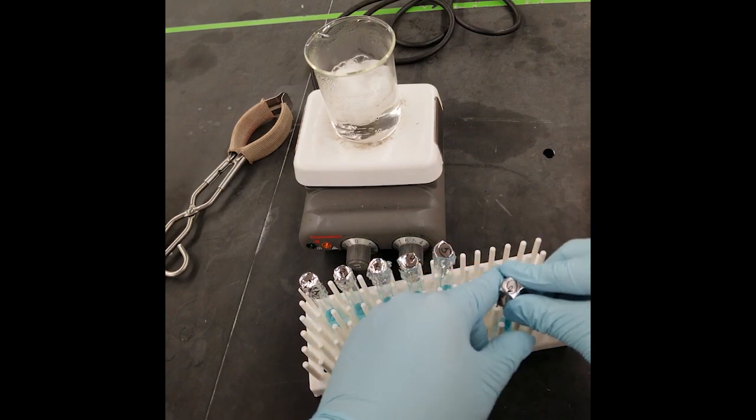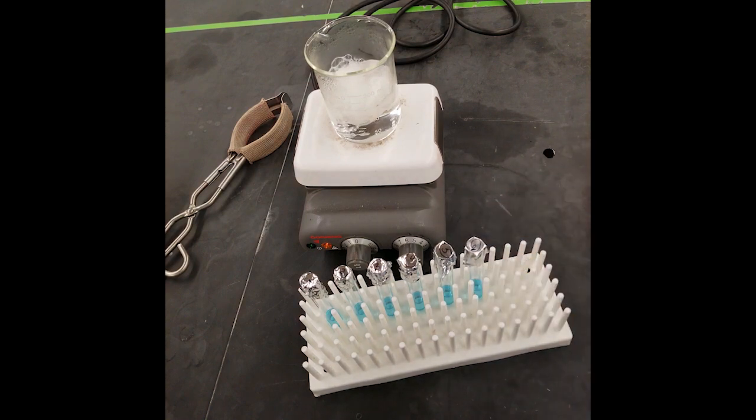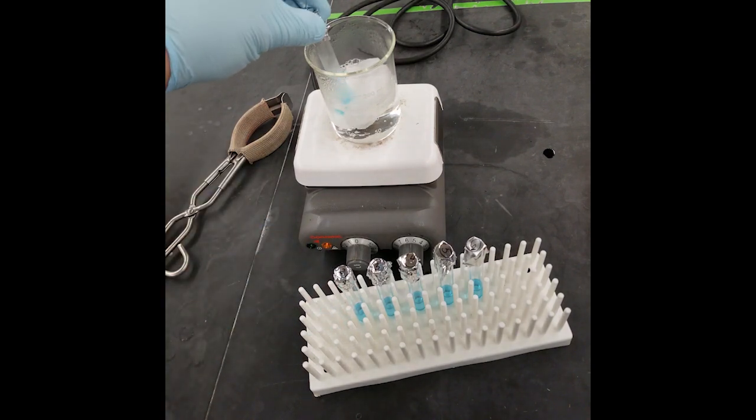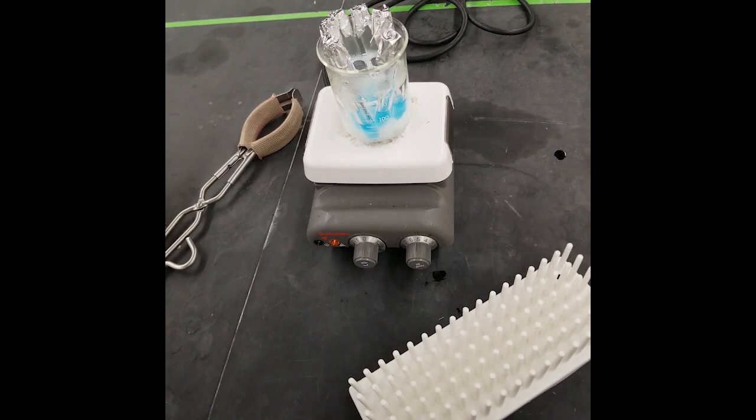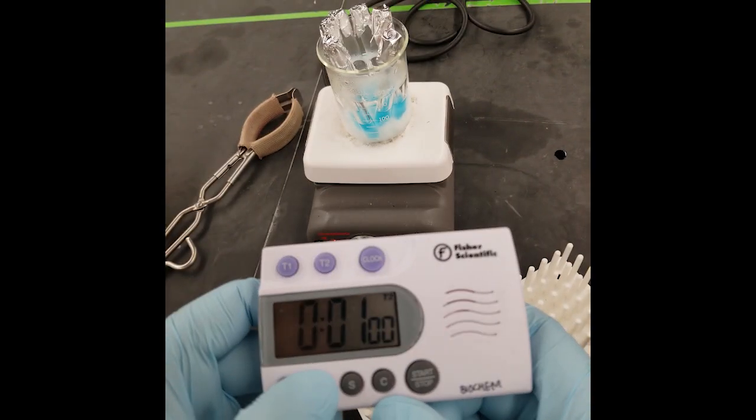After securing the foil over each tube, gently place each individual tube in the boiling water. The cheesecloth here is to protect any tubes from hitting the bottom of the beaker too aggressively. After placing the last tube inside the beaker, set a 20-minute timer for the boiling step.